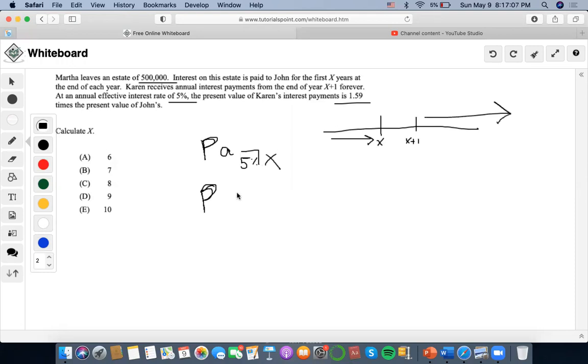So Karen's present value would be denoted at 5%, same as John's, but for an infinite amount of years. And we would have to compensate for the payments that are being deferred here to make this a present value equation for Karen.